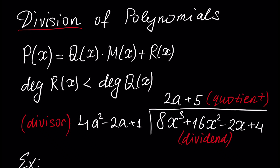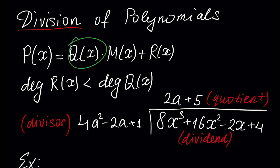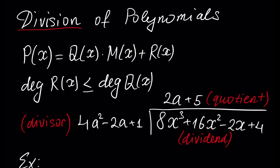In this video tutorial, we will learn division of polynomials. At the end of this tutorial, you will be able to divide any polynomial P by another polynomial Q with degree less or equal, and we will have a remainder R. We will also learn the process of long division — how to divide one polynomial by another polynomial — and we will give a lot of examples.